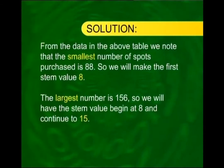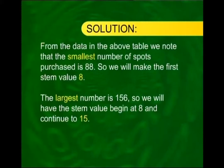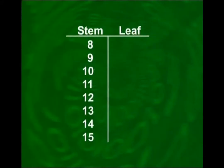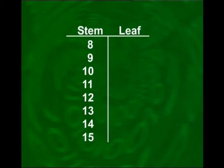To solve this, the first step is to note that the smallest value in the data set is 88, so we make the first stem value 8. Since the largest number of spots purchased is 156, we will have stem values going up to 15. Hence, the stem consists of the numbers 8, 9, 10, 11, 12, 13, 14, and 15. We then consider every data value one by one and fill out the plot.